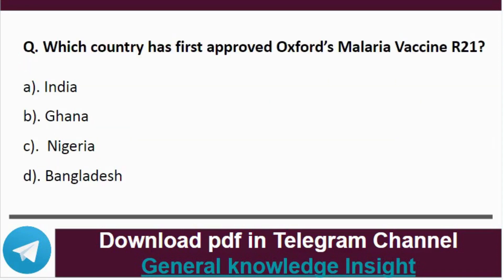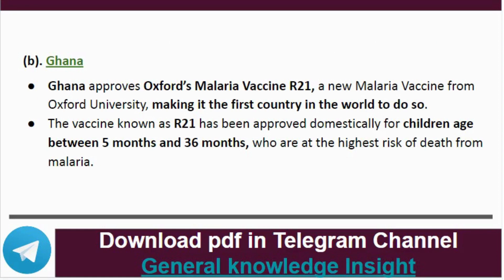Question 5: Which country has first approved the Oxford malaria vaccine R21? The correct answer is option A, that is Ghana. Ghana approved the Oxford malaria vaccine R21, a new malaria vaccine from Oxford University, making it the first country in the world to do so. The vaccine, known as R21, has been approved domestically for children aged between 5 months and 36 months, who are at the highest risk of death from malaria.